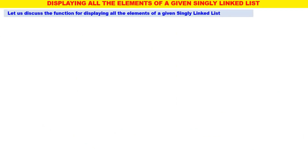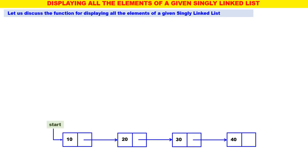Now let us consider the function for displaying all the elements of a given singly linked list. This is our list: 10, 20, 30, 40. Start is containing the address of the list. Why void for display? Because the display function will not return anything — it has to display all the elements of the singly linked list. Therefore, only one parameter for this display function: struct node star start. You give the starting address of the linked list and it will display all the elements.